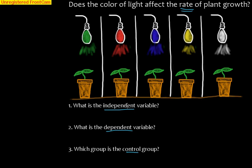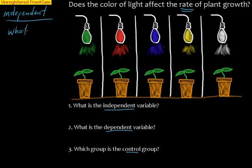Figuring out the difference between independent and dependent can often be confusing, and it's hard to remember which is which. So let's review what those two things are. The independent variable is what's different about the groups — what is different about the groups.